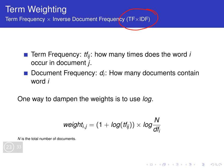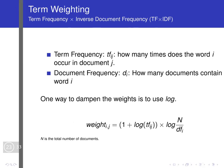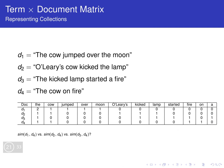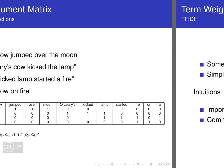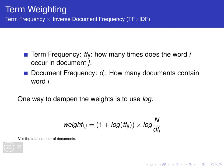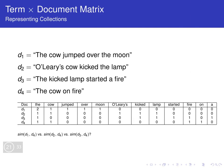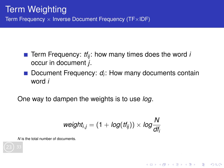The term frequency TF(i,j) is how many times word i occurs in document j. For example, the term frequency of the word 'the' in document j is two. The document frequency d(i) is how many documents contain word i. For example, the document frequency of the word 'the' is four — it occurs in all four documents.